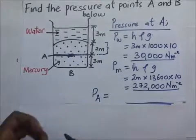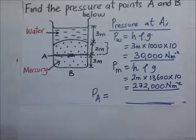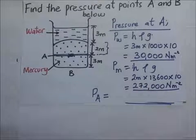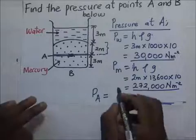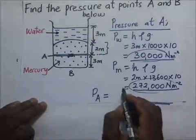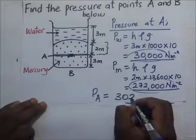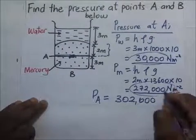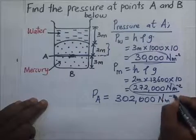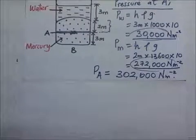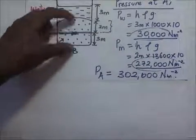The total pressure exerted at point A is 272,000 + 30,000 = 302,000 N/m².